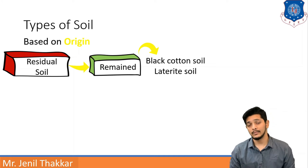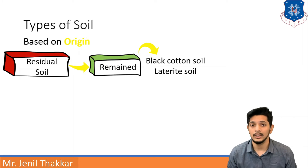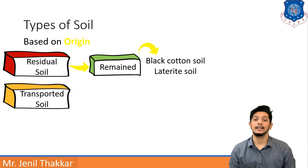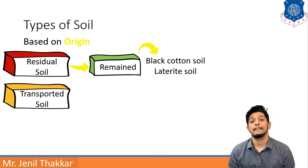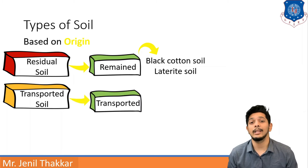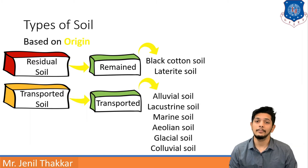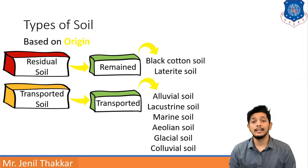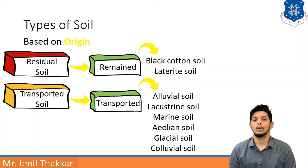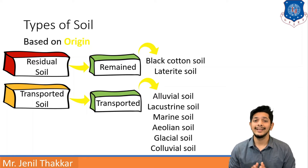The second type is transported soil — soil that is transported from one place to another. Examples of transported soils include alluvial soil, lacustrine soil, marine soils, aeolian soils, glacial soils, and colluvial soils. Details and pictures will be seen shortly.